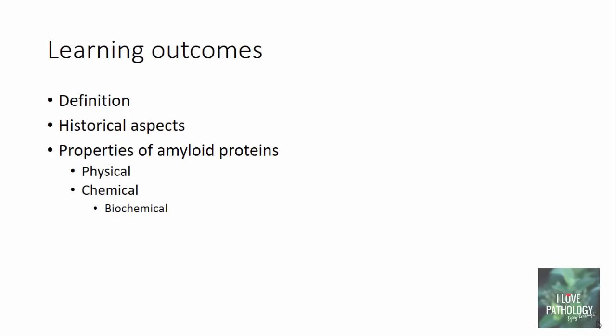In this Part 1 of Amyloidosis, the learning outcomes will be: we will define what Amyloidosis is, we will talk about the historical aspects of Amyloidosis, and then we will concentrate mainly on the properties of these amyloid proteins — discussing both the physical and chemical properties.